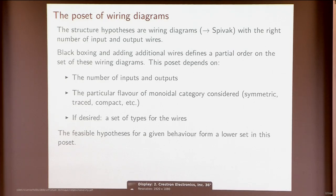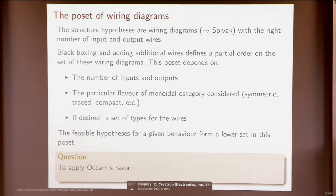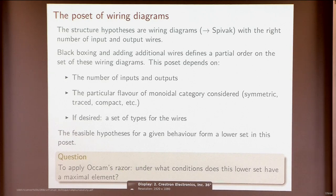I certainly can't tell the exact structure of the network inside because there's always the trivial hypothesis. The feasible hypotheses form this lower set. One might say that the best explanation for what's inside is the maximal element of this lower set — the most fine-grained one, the most predictive in the sense that it would explain the least amount of other potential behaviors. One would like this lower set to have a maximal element, though I don't know under what conditions one can expect this to be the case.